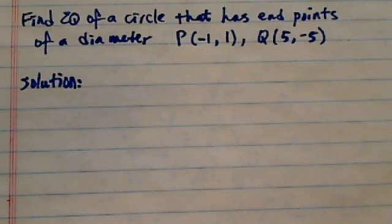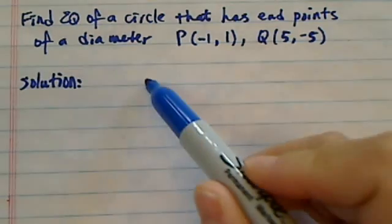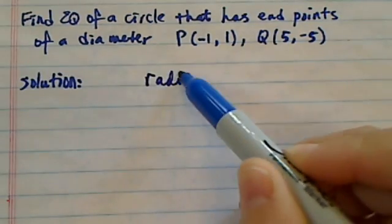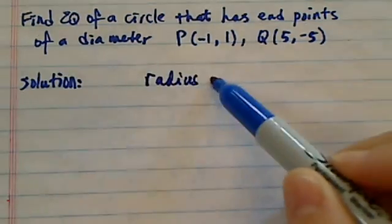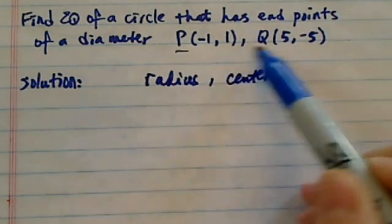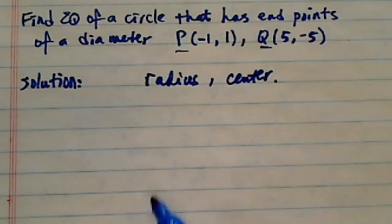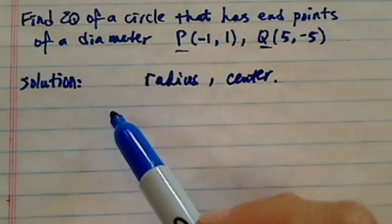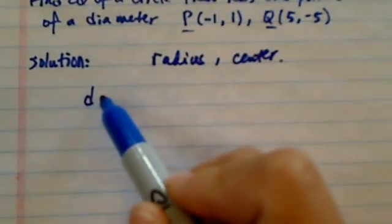To find a circle that has endpoints of a diameter at P and Q, you need to find the radius and center. The center is halfway between P and Q, so the radius is the distance between the two divided by half. Let's find the distance first.